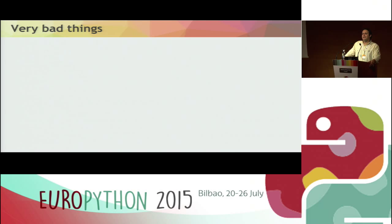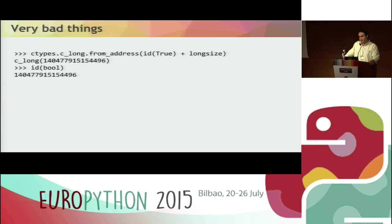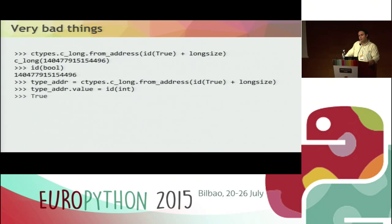Another thing — the Boolean type is so similar to the int type that I have to play with it. I get the ob_type of Boolean — this is the address, which is the same as the ID of class bool. I get the ob_type field of the True variable and set it to the class int. And now True has the representation of an integer. Cool.